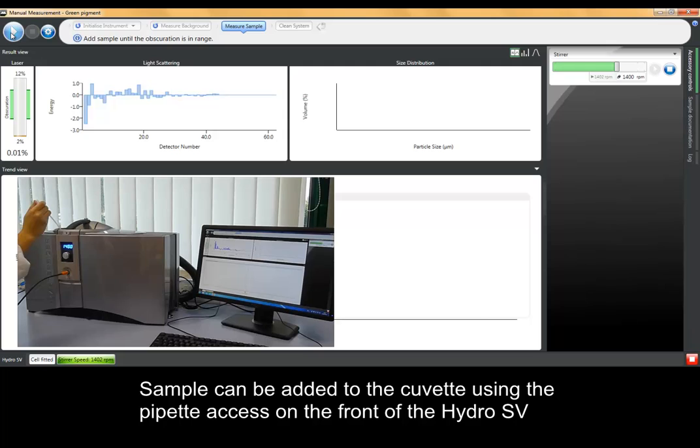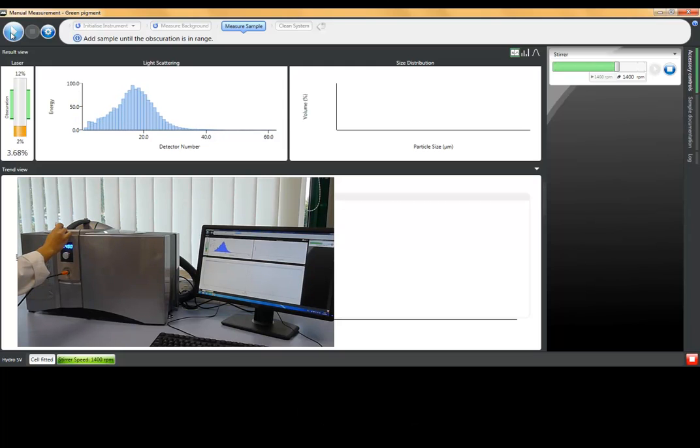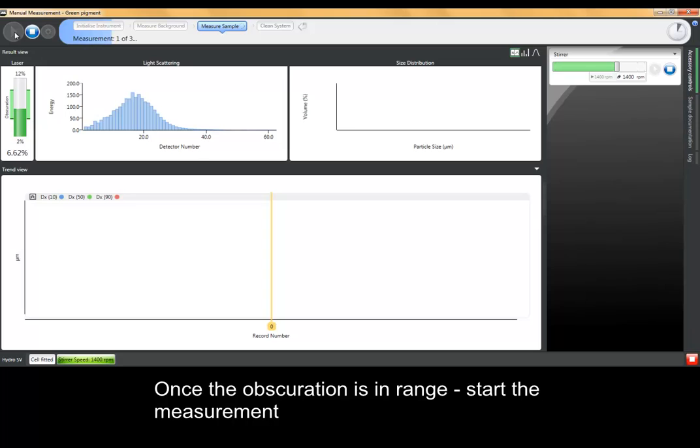Once the background has been measured, we can add the sample using the pipette access on the front of the Hydro SV. This allows you to see how much sample you have added and to control the obscuration at which you make a measurement. We can then start measuring the sample and in this case we are going to do three repeat measurements.